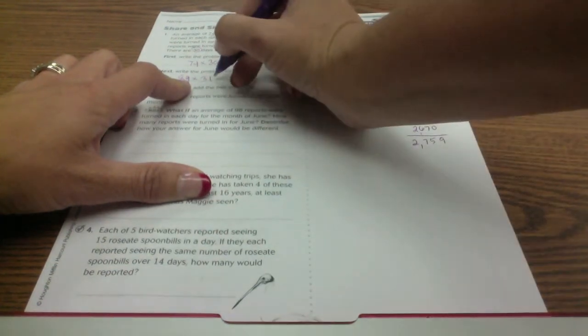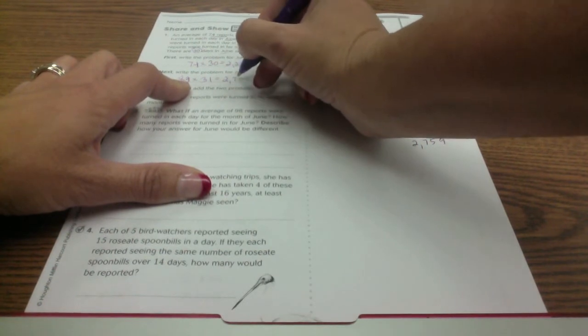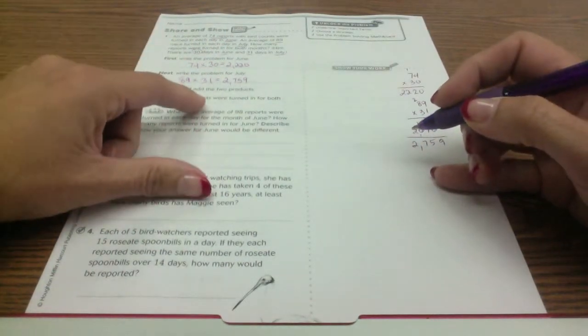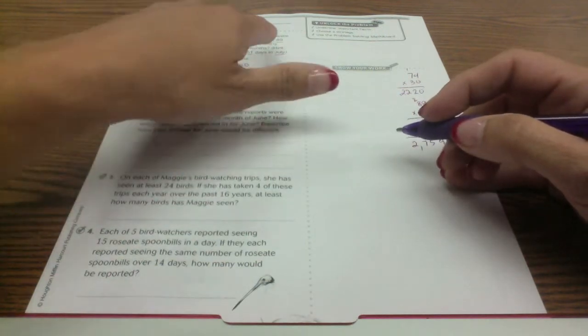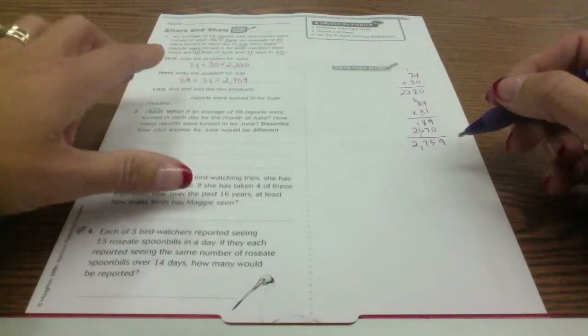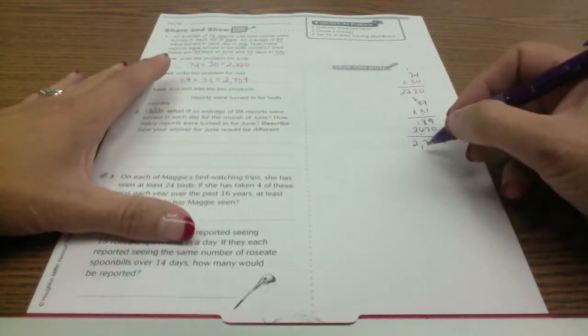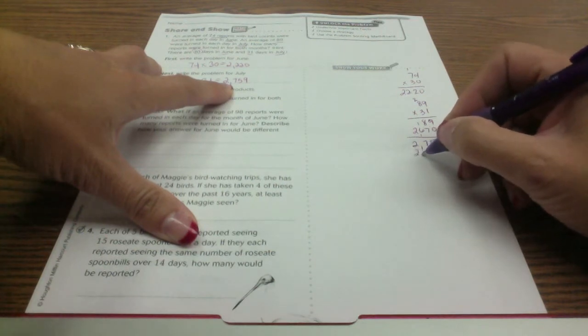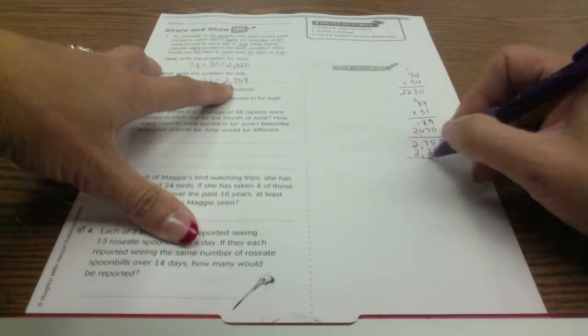So 2759. The question, I'm gonna go back and find out what the question was. How many reports were turned in for both months? So I'm going to need to add those two months together. I already have 2759 here, I'm just gonna add the 2220 for June.